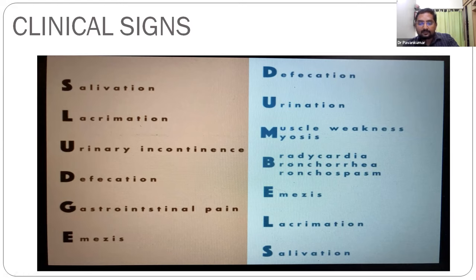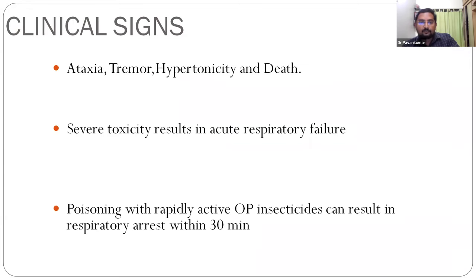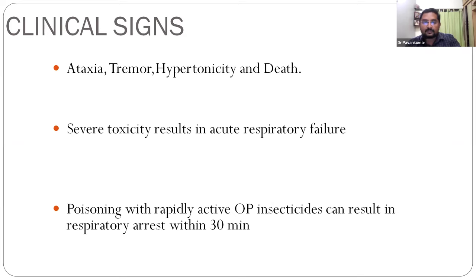These are the classical clinical signs in OP toxicity, including salivation and diarrhea. Along with muscarinic signs, nicotinic signs also appear since acetylcholine is binding to nicotinic receptors - ataxia, tremor, hypotonicity, and eventually death. Severe toxicity results in acute respiratory failure. Death is mainly attributed to respiratory arrest: continuous stimulation of the nicotinic receptor causes persistent depolarization, muscle weakness, and paralysis of the diaphragm and intercostal muscles, leading to respiratory arrest and death.